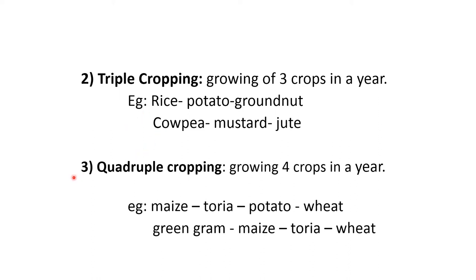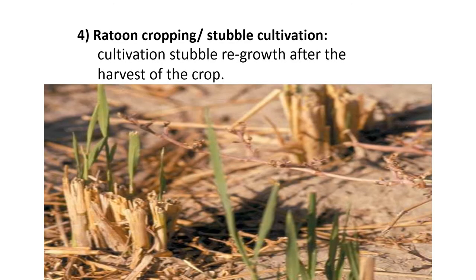Next is quadruple cropping — here four crops are grown in a year. Example is maize, toria, potato and wheat, or it could be green gram, maize, toria, and wheat. The fourth one is ratoon cropping, or stubble cultivation — the cultivation of stable regrowth after harvest of the crop. Example is sugarcane or mulberry.